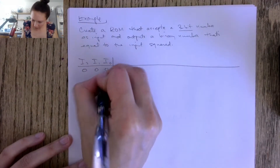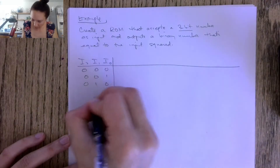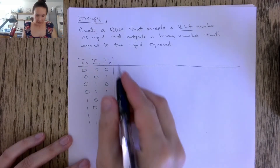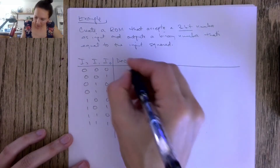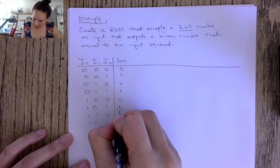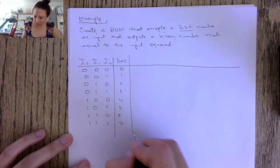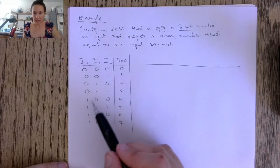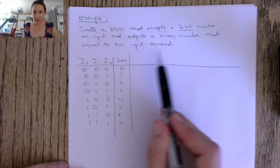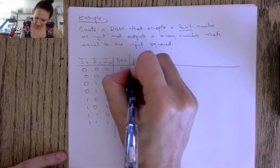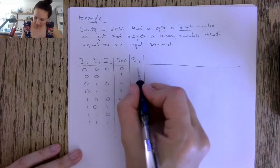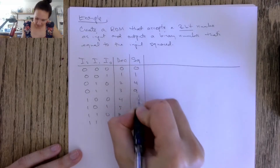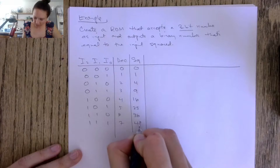We have a 3-bit input, so the inputs are I2, I1, I0. The input possibilities run from 000 through 111, which correspond to decimal values 0 through 7. The squared column gives us: 0 squared is 0, 1 squared is 1, 2 squared is 4, then 9, 16, 25, 36, and 49.